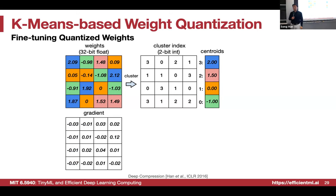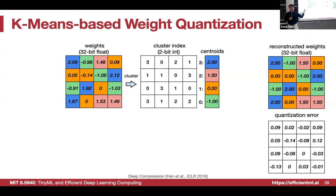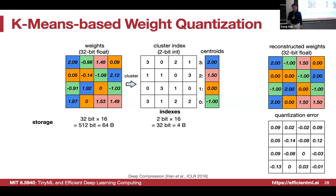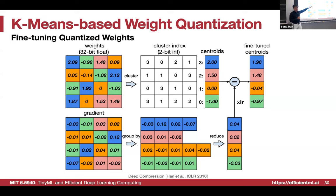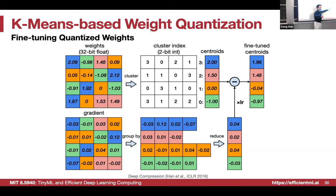For fine-tuning: compute gradients as if independent, then cluster the gradients in the same pattern as the weights. Accumulate gradients of the same color together, sum or average them, subtract learning rate times the accumulated gradient from the centroid, and get the updated centroid. That's one iteration of fine-tuning on K-means quantized weights — we'll implement this in homework.